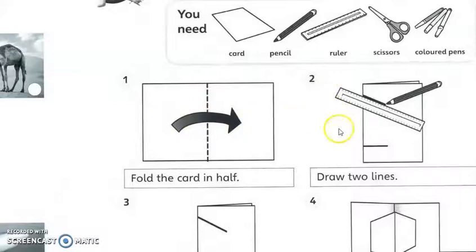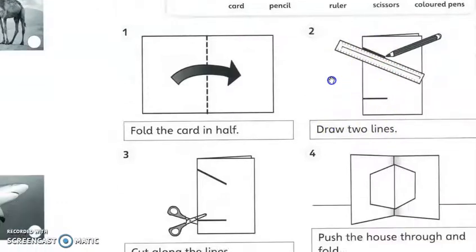Second, draw two lines, like this lah. Satu. Yang ni jangan sampai putus ya, disini, disini satu. Dah nampak macam bentuk rumah. Draw two lines. Number three.